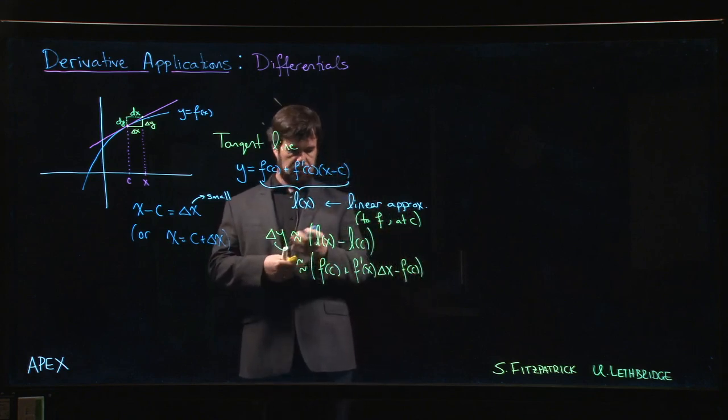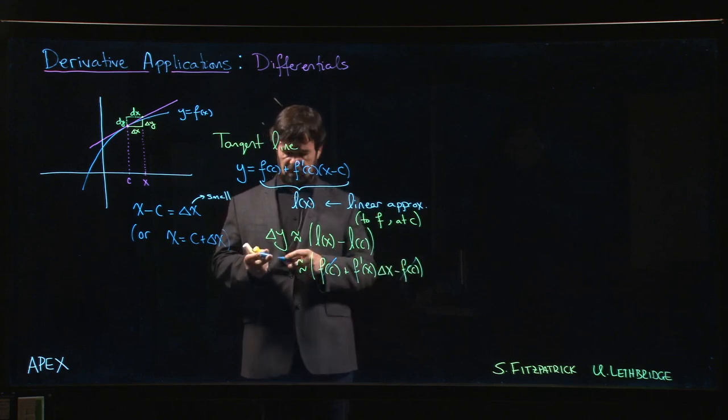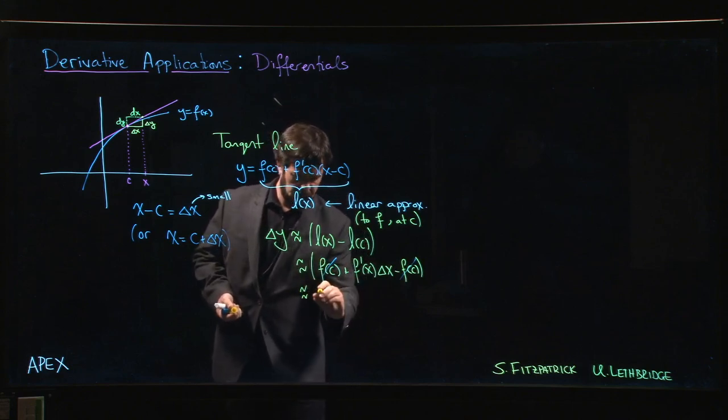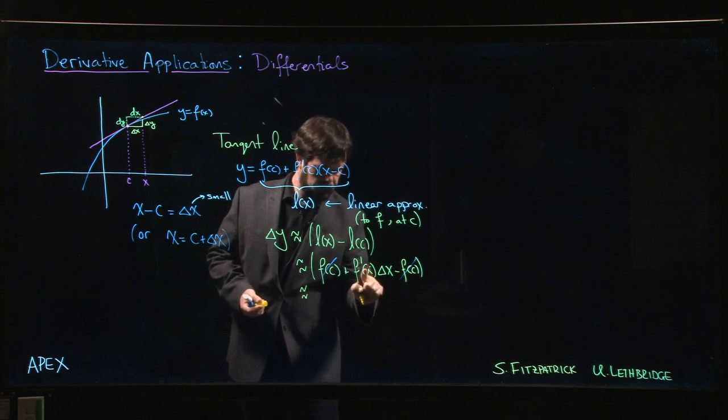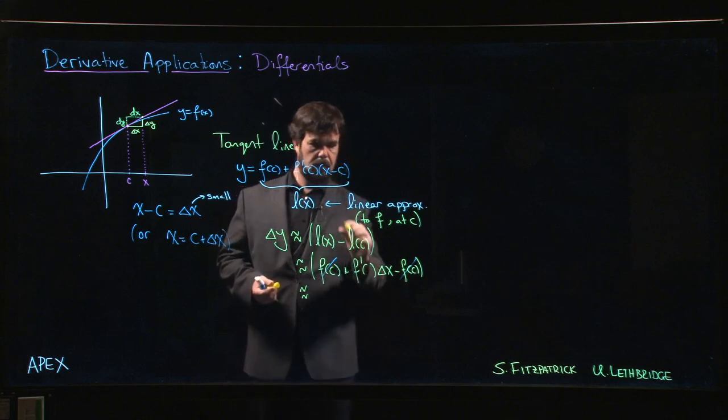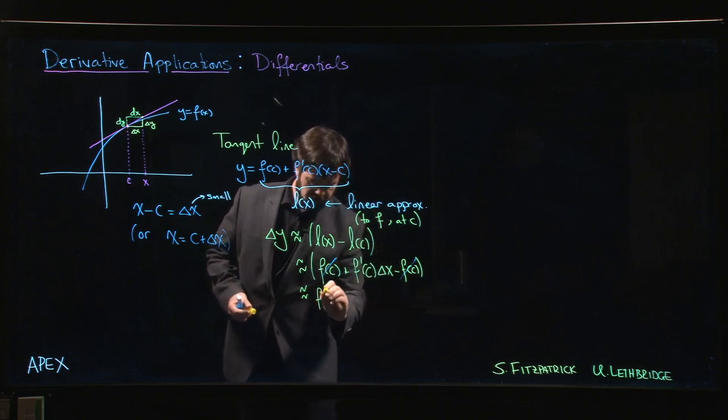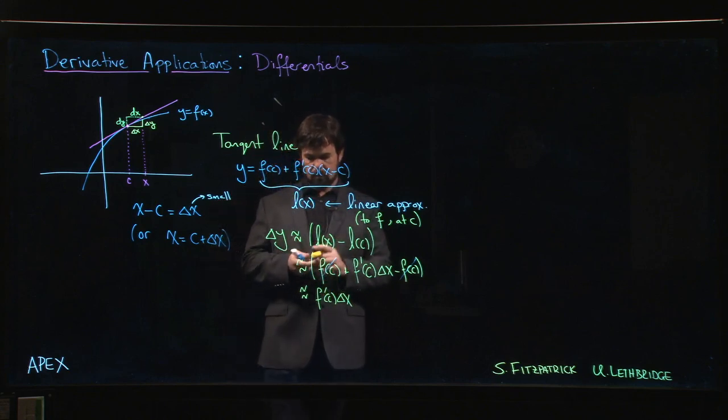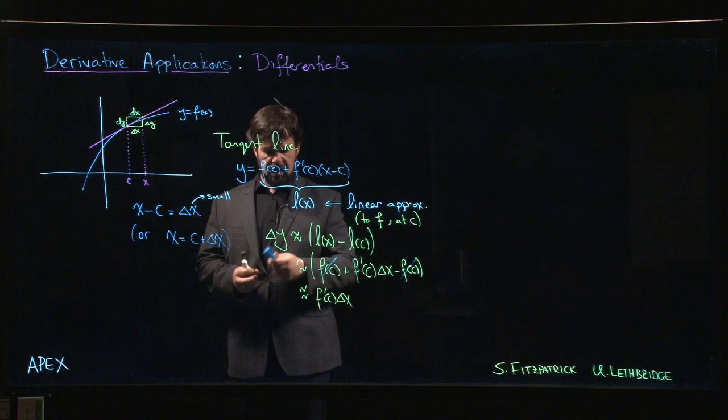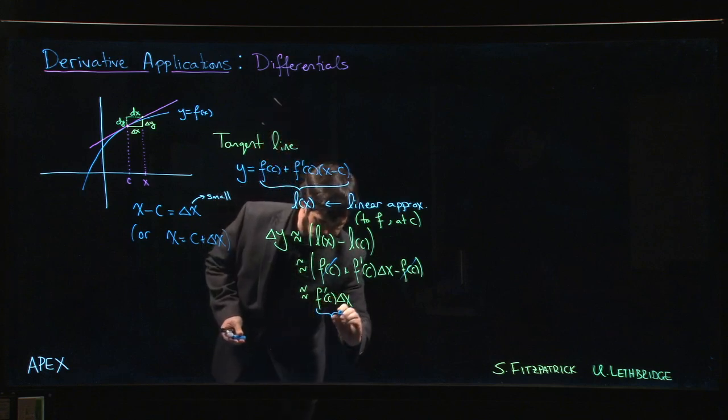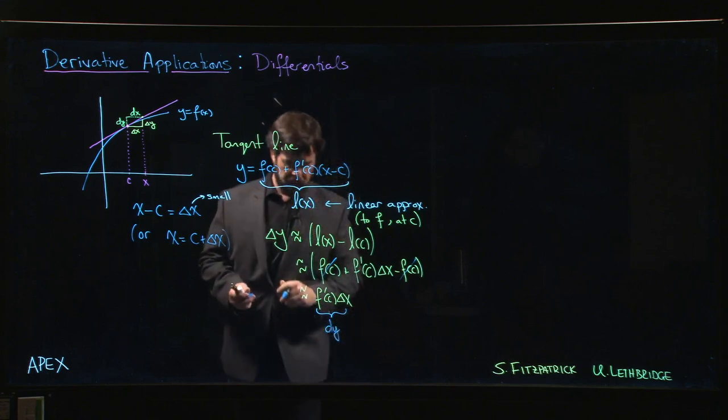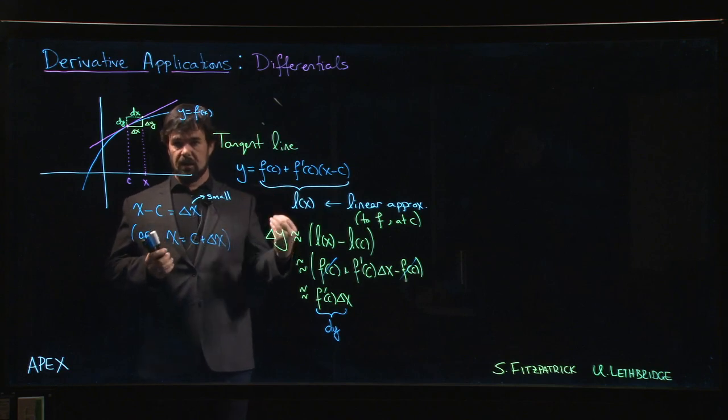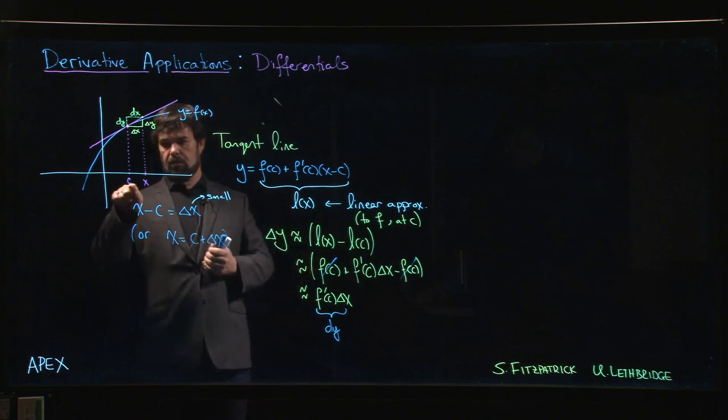Those cancel, and so what we get for our approximation is f prime of c times delta x. This quantity here is what's known as the differential dy. The differential dy measures the linear change in your function when you move from the original point c to some nearby point x.